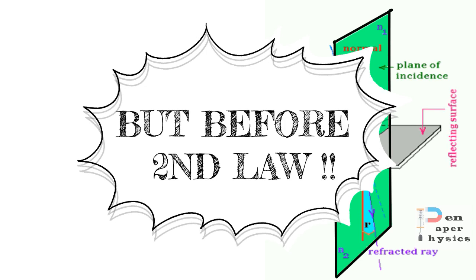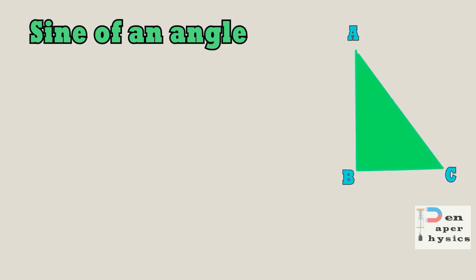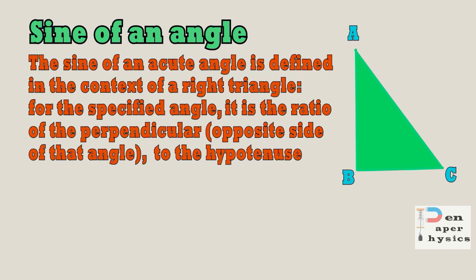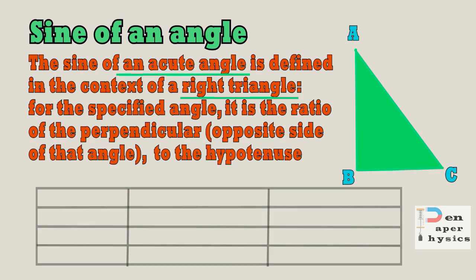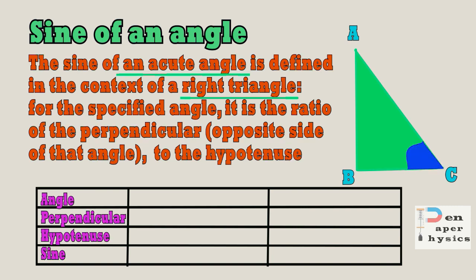Before we move to the second law, we will first learn about the concept of sine of an angle. This part is specifically for students in middle school, because they may not have a concept of sine of an angle — senior students can skip this part. The sine of an angle is basically the ratio of the perpendicular to the hypotenuse with respect to that angle in a right-angle triangle. To find the sine of an angle, we must have a right-angle triangle and the angle must be an acute angle. For example, I have taken right-angle triangle ABC with the right angle at B, giving two acute angles: angle A and angle C.